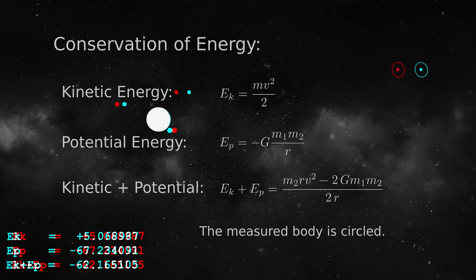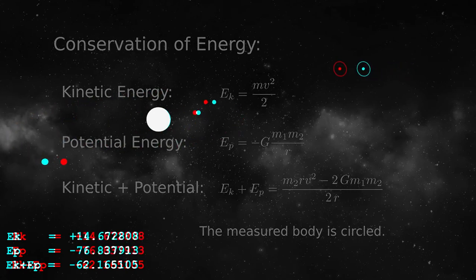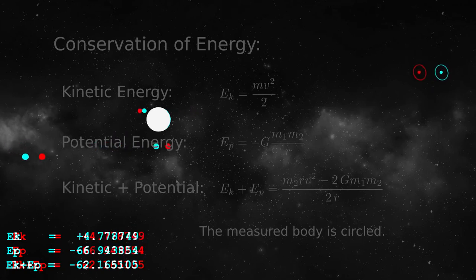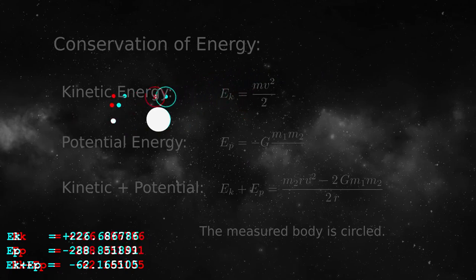I resisted the impulse to provide a full mathematical derivation here in this video that's supposed to be about anaglyphic 3D, so instead I'll put a link to one of my articles in this video's description. Suffice it to say that a planetary orbit, however extreme, should not gain or lose energy over time and the sum of kinetic and potential energy should equal a constant.